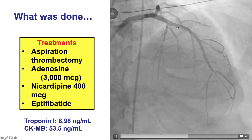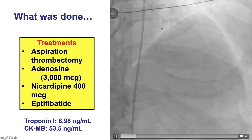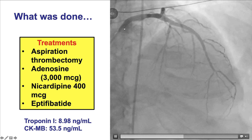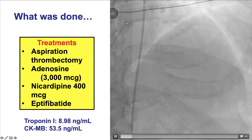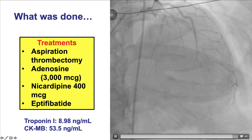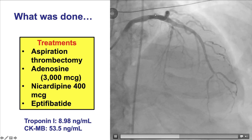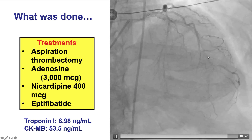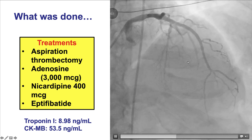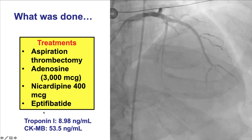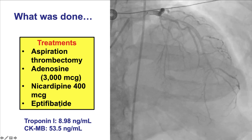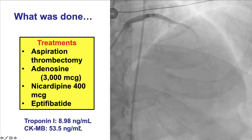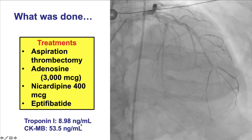Another key factor is to administer vasodilators ideally through a microcatheter to the area of obstruction, because if given through the guide catheter they are more likely to flow into other coronary arteries with normal flow rather than into the area needing treatment — the area with distal embolization and no-reflow. In this patient, a glycoprotein 2B3A inhibitor was also administered. The patient did well but did have a post-procedural myocardial infarction.